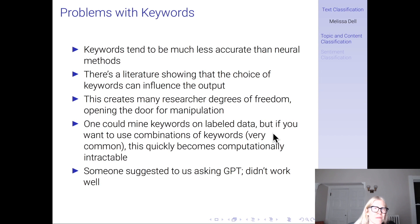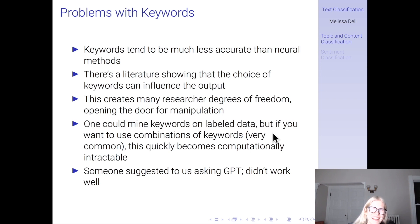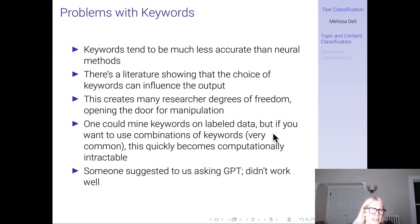Some people suggested using GPT to find keywords, and maybe this would solve some of the problems with keywords. Unfortunately it didn't work that well. For example, we asked GPT to suggest keywords for finding newspaper articles written in 1916 about the war in Europe, and the first thing GPT tells us is 'World War I' — which is not going to pull up anything from 1916. So GPT is not going to magically solve whatever problems exist with keywords either.